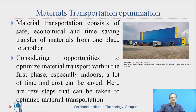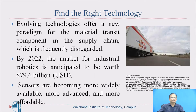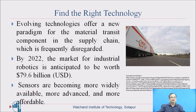Now we will see a few steps that can be undertaken to optimize material transportation. First: Find the right technology. This is an important step. Evolving technologies offer a new paradigm for the material transit component in the supply chain, which is frequently disregarded. So, the latest technologies must be used for material transportation.